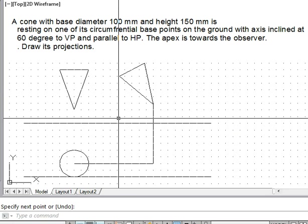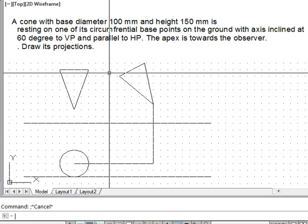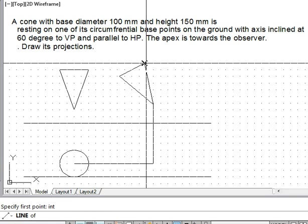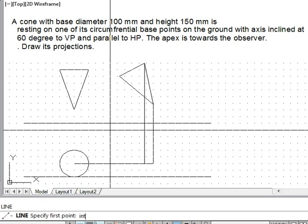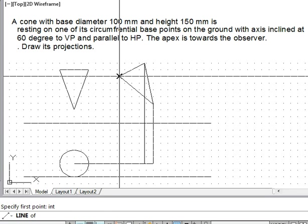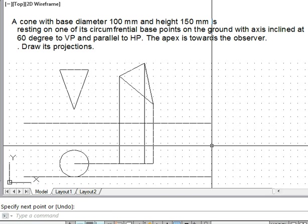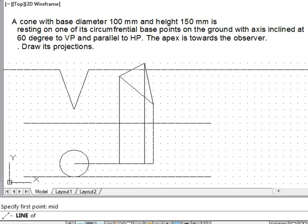And what about the base? The base will now be converting to an ellipse. Now what is the location of the ellipse? How do we locate the ellipse? From here we drop the perpendicular up to this point. This is one point on the ellipse.